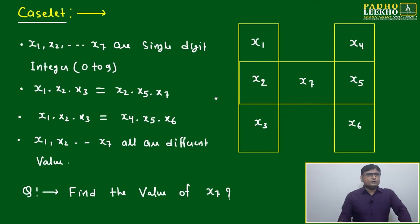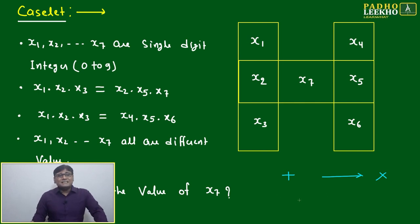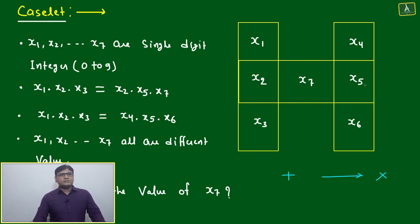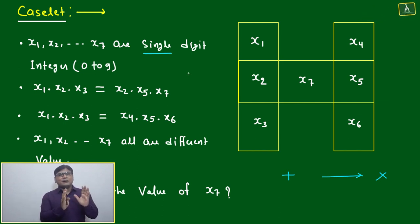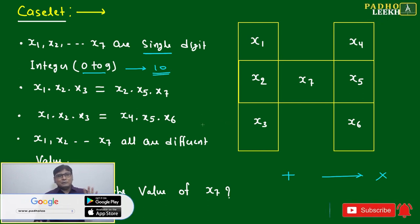We'll discuss one case. If we change this, the toughness level will increase — you have to apply a lot of deduction. The question involves x1 through x7 in an H-type figure. These are not single-digit numbers by default, but if given as single digit, that means 0 to 9 only — 10 inputs total — and we have to pick 7.